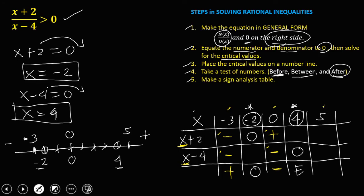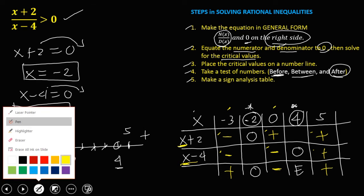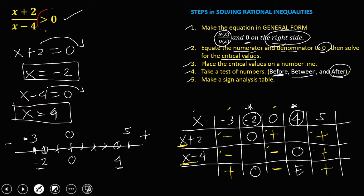Then if x equals 5, so 5 plus 2 is positive 7, and 5 minus 4 is positive 1. Positive divided by positive is positive. This is the sign analysis table. From the given, we have greater than 0.